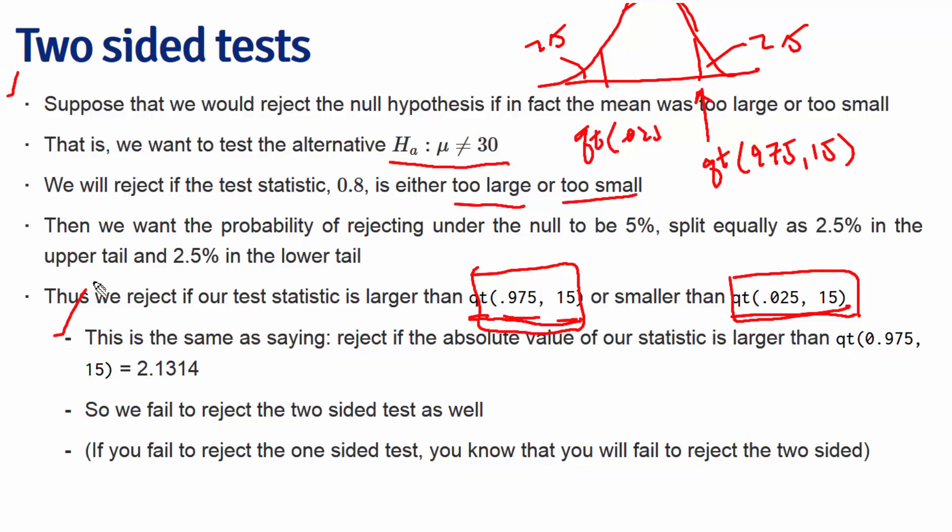In this case, we failed to reject the one-sided test, and we also failed to reject the two-sided test. However, I think you'll probably already noticed that because we've moved further out into the tails of the t-distribution with our rejection region, if you fail to reject the one-sided test, then you will also have failed to reject the two-sided test.